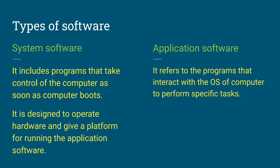Application software refers to programs that interact with the operating system of the computer to perform specific tasks. For example, we have document creation, photo editing, video editing, presentation, and painting or picture drawing. Each of these is one task — one software. That is application software.